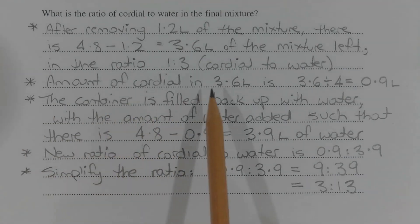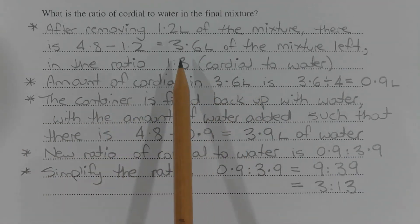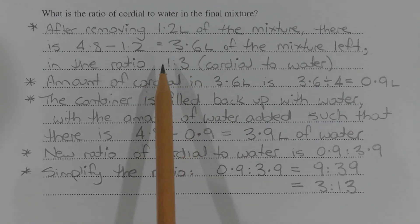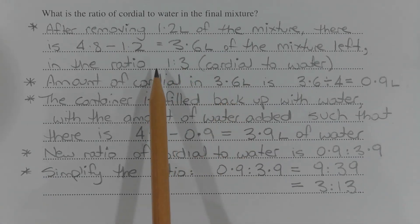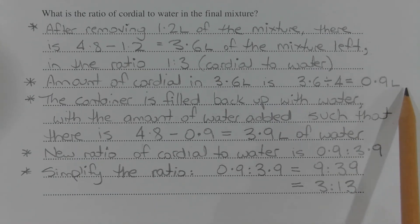The amount of cordial in 3.6 litres is found by dividing 3.6 litres by the number of parts in the ratio, which is 4, and then multiplying it by the term that corresponds to the cordial, which is 1. So 3.6 divided by 4 times 1 is equal to 0.9 litres.